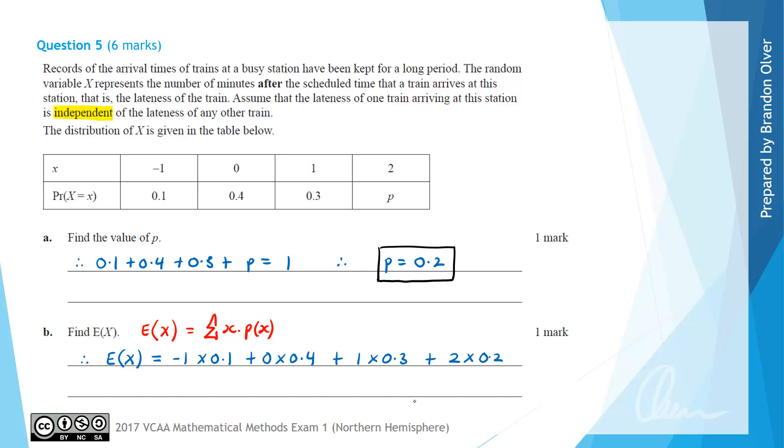whose value is 0.2. So the expected value of X is equal to negative 0.1 plus 0 plus 0.3 plus 0.4 and that is equal to 0.6. So that is the answer to part B of this question.